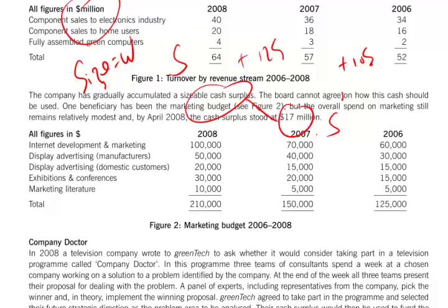However, it does say the board cannot agree on how this cash could be used. If you wanted to, you could put up this idea of dissension or a slightly divided board as being a potential weakness — maybe not a very strong one, but undoubtedly some sort of disagreement on the board is not a good sign. We come on then to look at the marketing expenditure, and this is tiny. 210,000 as a comparison to the turnover of 64 million is absolutely very, very small indeed. Probably that's a weakness — the company doesn't spend enough on marketing and making itself known. Perhaps its success has been basically to do with its technical excellence, but there's certainly no problem in identifying a weakness stemming from very small marketing expenditure.